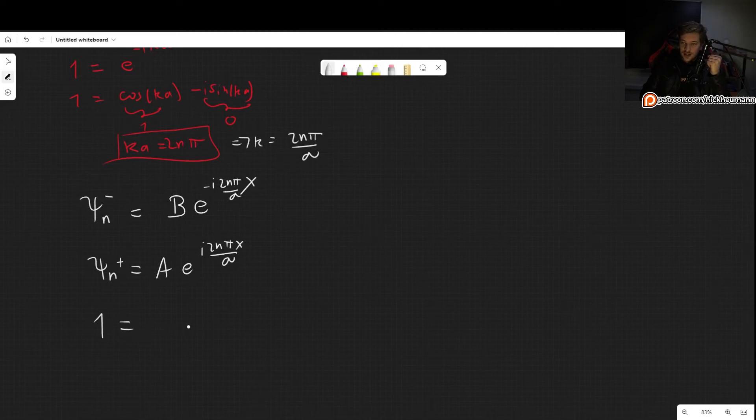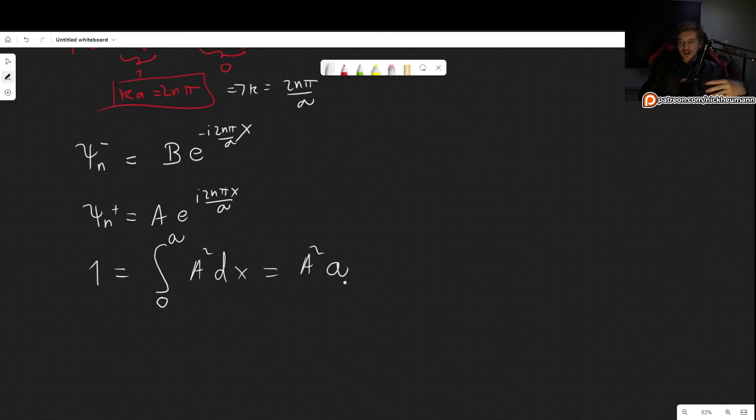Let's now normalize them. So 1 equals integral from 0 to a, we are only integrating once because it's going to be spinning around all the time, but we only want to integrate over one spin. And then any of these squared, for example A squared, and then e times its complex conjugate, but they cancel out because one is positive, one is negative, they add, they cancel out. So we get A²dx. So this is simply A² times a, and notice that this didn't depend at all on the wave function.